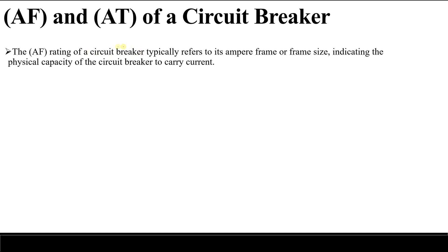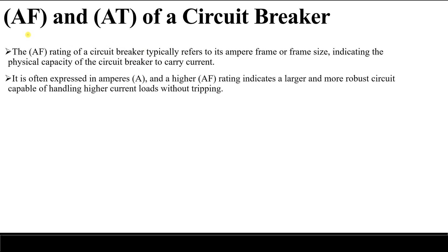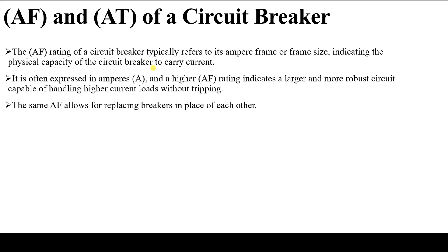For example, if the AF is 300 amperes, this means that the circuit breaker is designed to cut off or trip a maximum current of 300 amperes. This value is usually expressed in amperes, and of course a higher AF means it can interrupt higher and larger currents, or handle higher current loads without tripping.